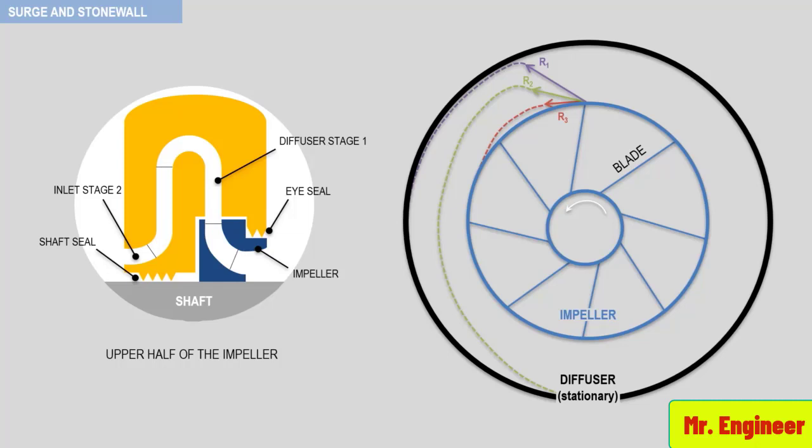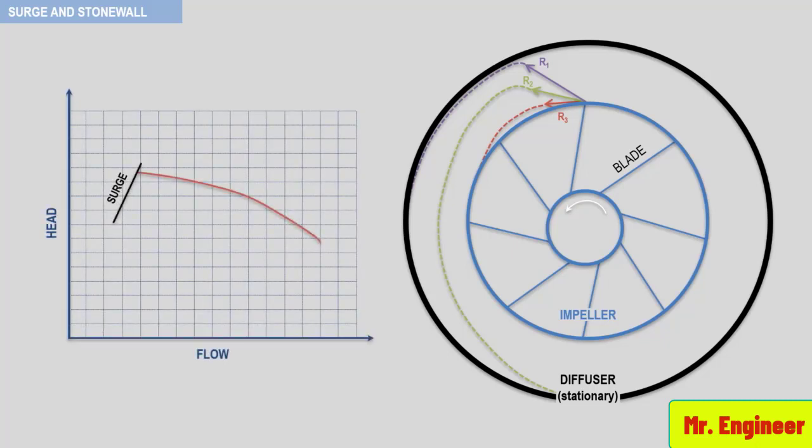The dynamic compressor performance curve actually decreases to the left of the surge line since the flow separation increases losses in the stage and reduces the head produced.